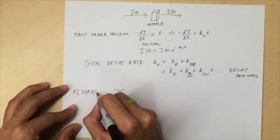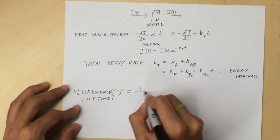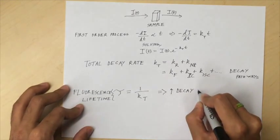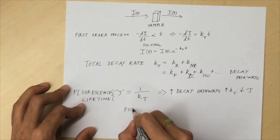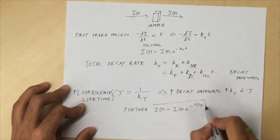Fluorescence lifetime tau is inversely proportional to the total decay rate. Thus, with the increase in decay pathways, the decay rate will increase, thereby leading to shorter fluorescence lifetimes.